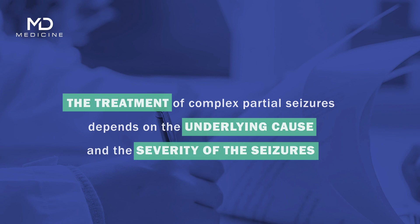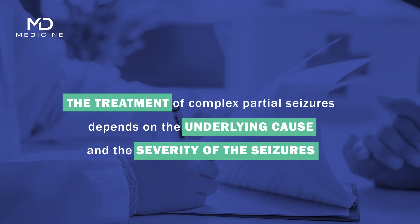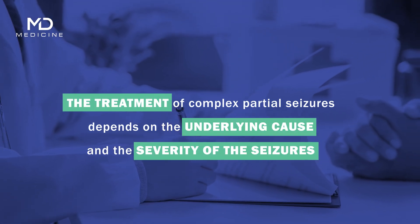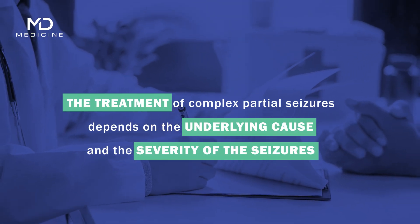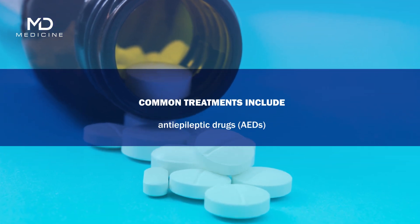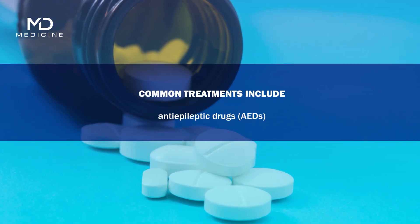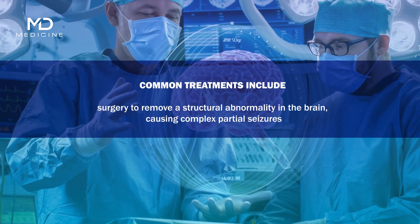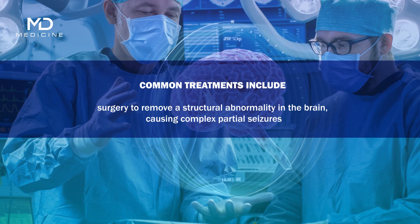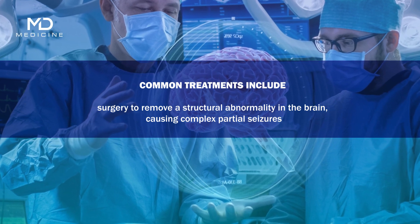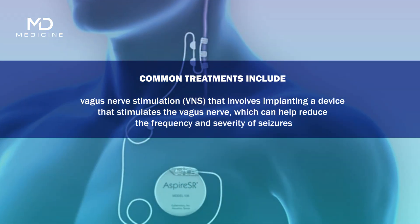The treatment of complex partial seizures depends on the underlying cause and the severity of the seizures. Common treatments include anti-epileptic drugs (AEDs), surgery to remove a structural abnormality in the brain causing the seizures, and vagus nerve stimulation (VNS).